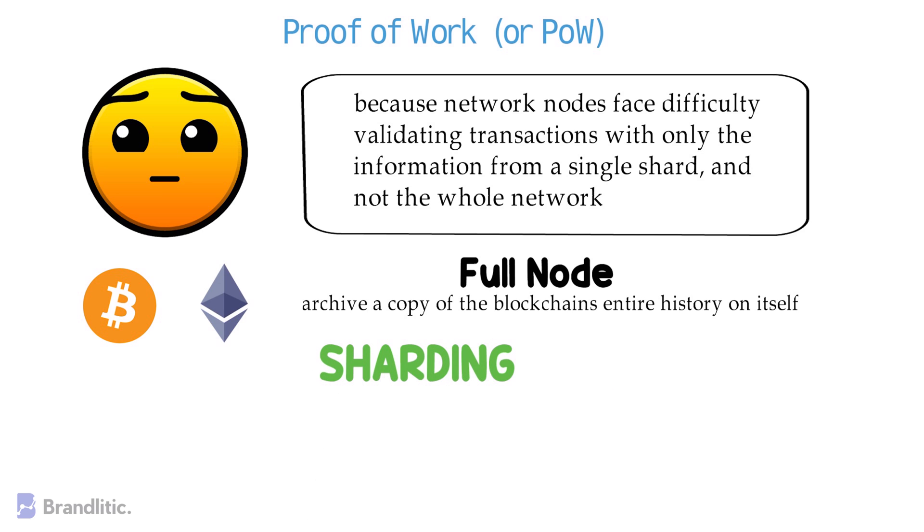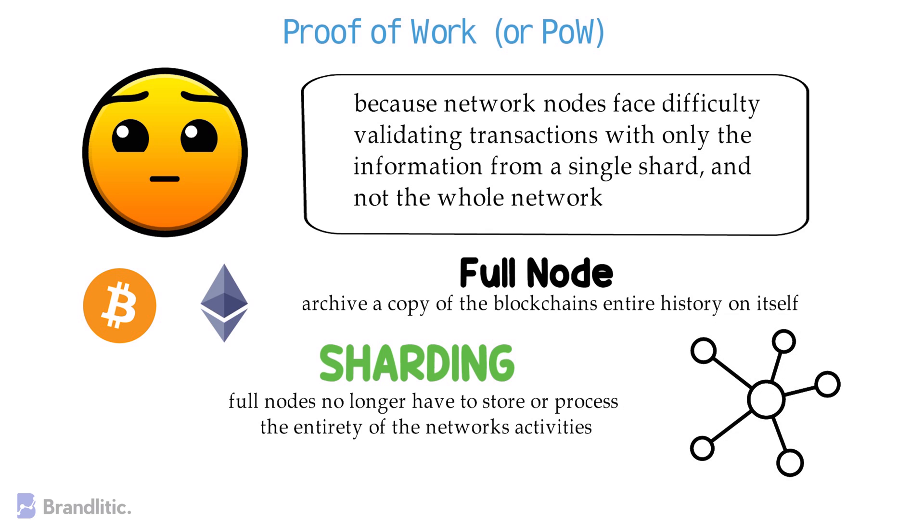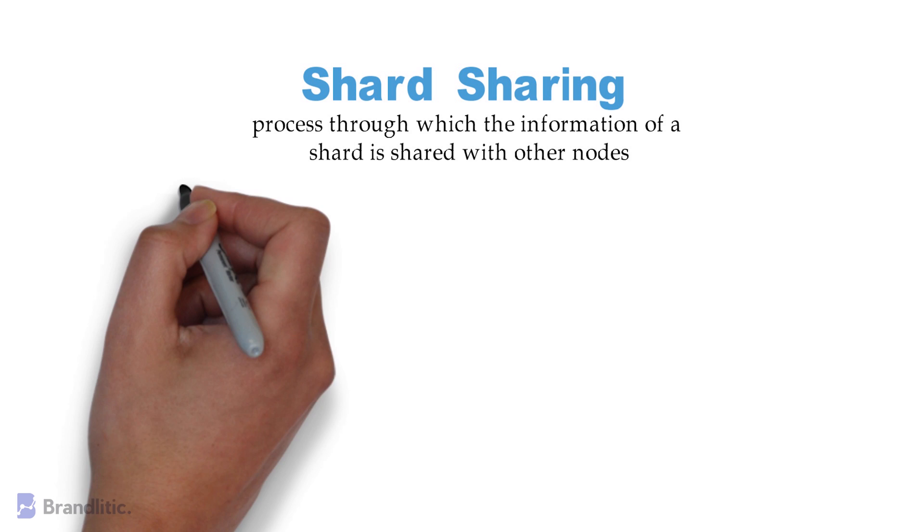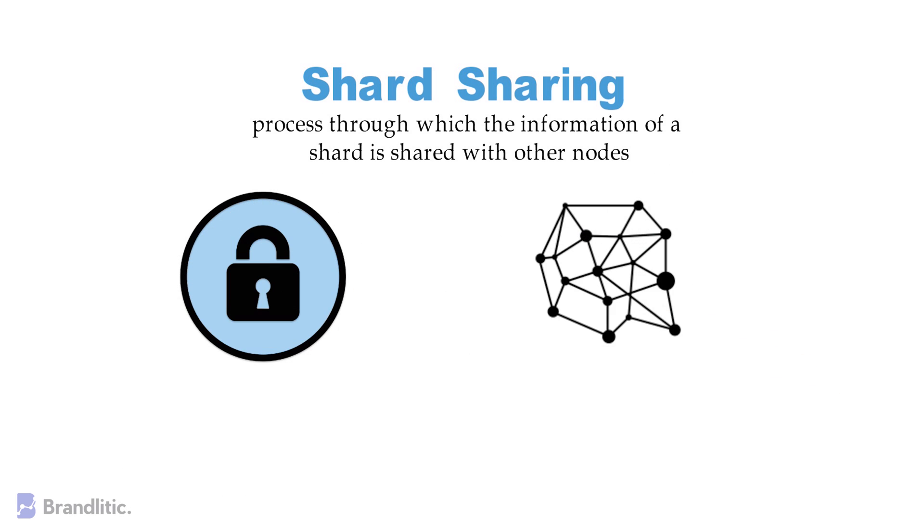this requires quite a lot of memory and computing power, which might not be possible in the scaling stage and can be quite hard to handle. With sharding, this problem is solved to a great extent as full nodes no longer have to store or process the entirety of network activities. Instead, each node only has to maintain data related to its own shard. But how will the other nodes realize that the transaction has happened? The answer is shard sharing, a process through which the information of a shard is shared with other nodes. This maintains the security and decentralization of the network because all participants can see all ledger entries without having to store and process every bit of information.